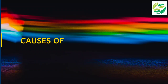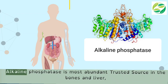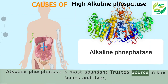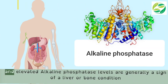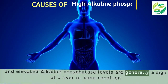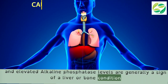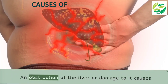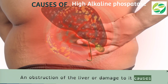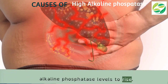Causes of high alkaline phosphatase: Alkaline phosphatase is most abundant in the bones and liver, and elevated alkaline phosphatase levels are generally a sign of a liver or bone condition. An obstruction of the liver or damage to it causes alkaline phosphatase levels to rise.